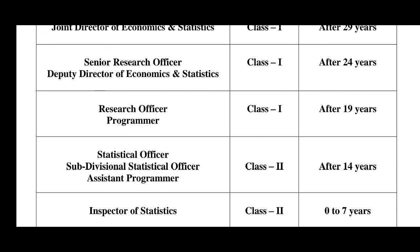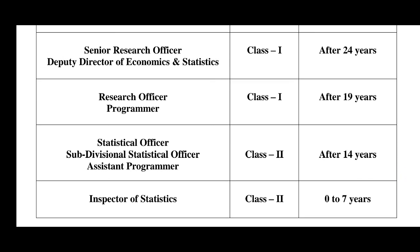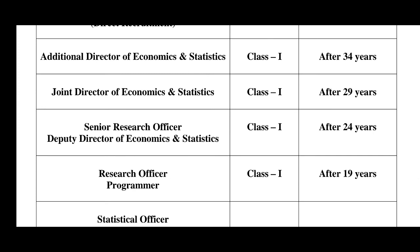After 24 years of service, according to the service rules, the Senior Research Officer becomes the Deputy Director of Statistics and Economics. After approximately 29 years, the Director of Economics and Statistics post becomes accessible. This is a Class-I gazetted category.